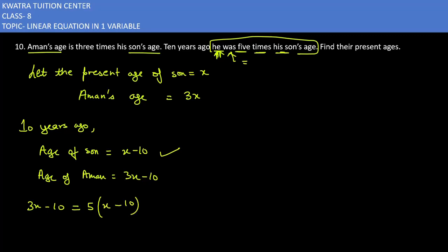Now, you will have left side 3x minus 10. Right side will be 5x minus 50. After that, 3x and 5x to one side, minus 50 and minus 10, so it is minus 2x equals minus 40. x value is minus 40 over minus 2, so minus 40 over minus 2 is nothing but 20.